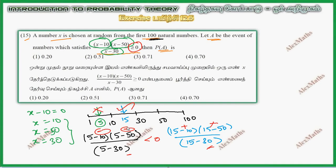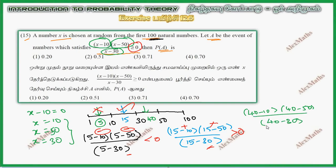For the next region, for example x equals 40: (40 minus 10)(40 minus 50) divided by (40 minus 30). This is positive, negative, positive — giving less than 0. So this region is not possible; it does not satisfy the inequality.